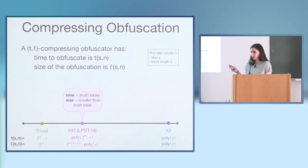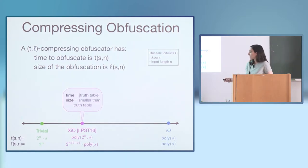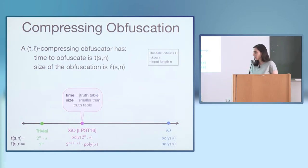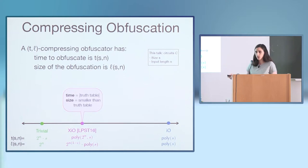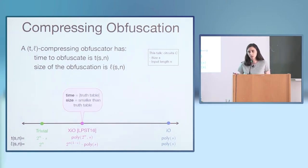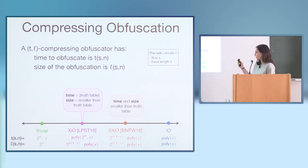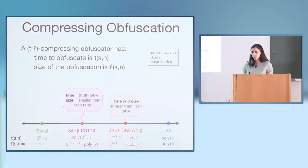One interesting setting is exponentially efficient IO, or XIO, introduced by Lin et al. In XIO, it's allowed to have the running time of the trivial obfuscator — it can go over all inputs and know the whole truth table of the circuit — but all we require is that the obfuscated circuit is somewhat smaller than the truth table, just slightly non-trivial. This has also been strengthened to strong XIO, or SXIO, by Baton-Sketal, in which both the running time and the output length are slightly smaller than the truth table.